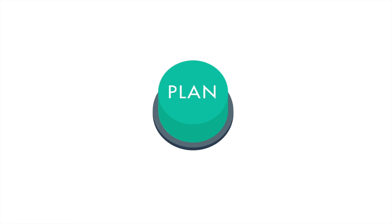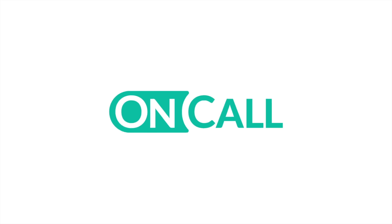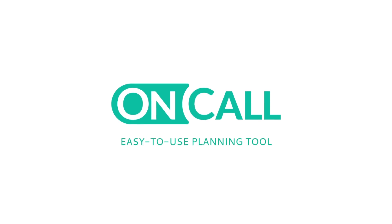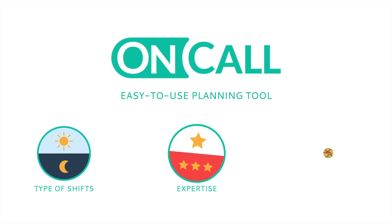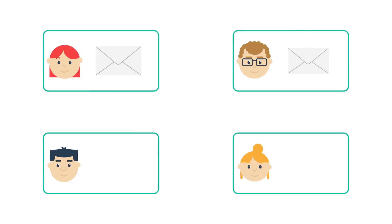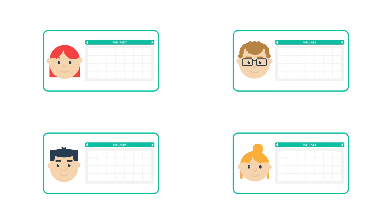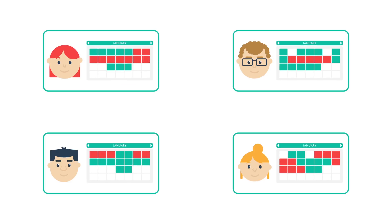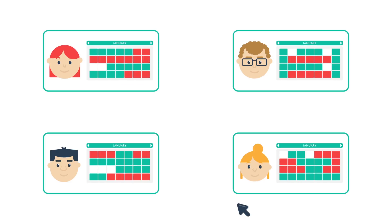What if you could generate the most preferable planning at the click of a button? With On-Call you can. In this easy-to-use planning tool, you quickly define parameters and demands. With a single click, you send invites or reminders to all team members, who can now indicate their preferences online.